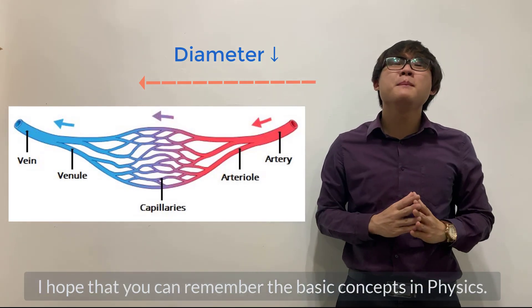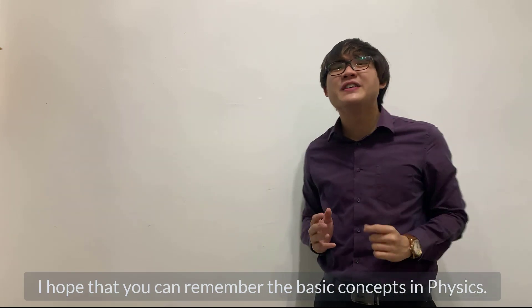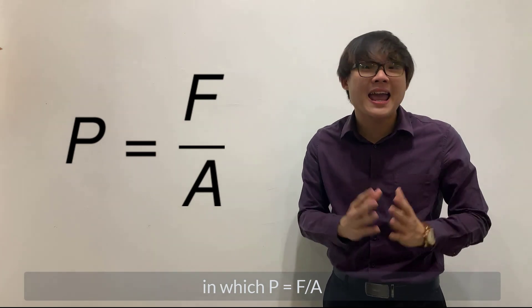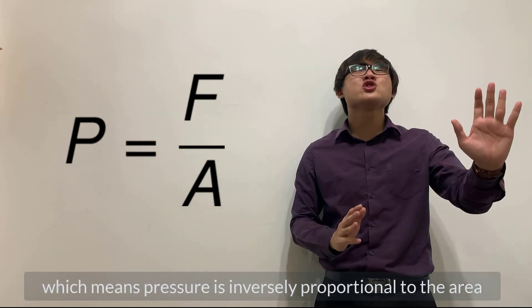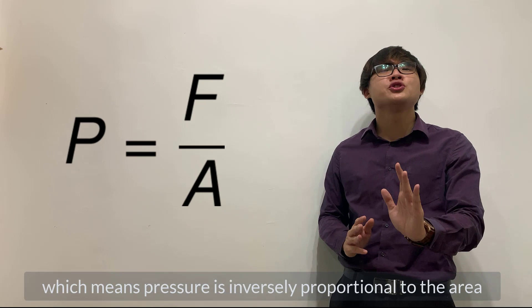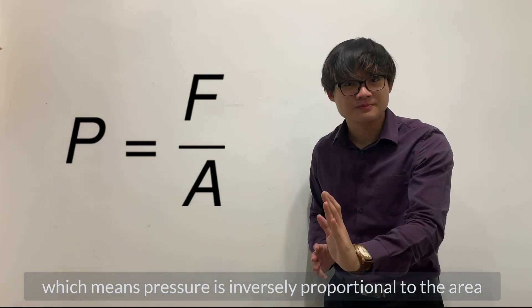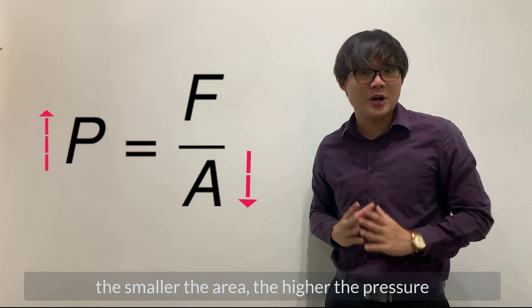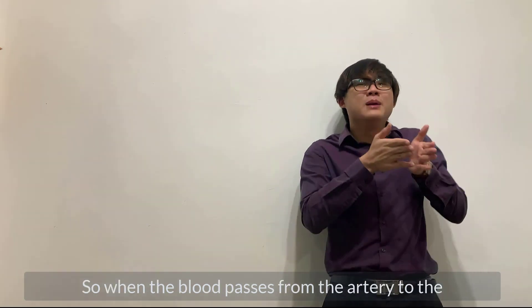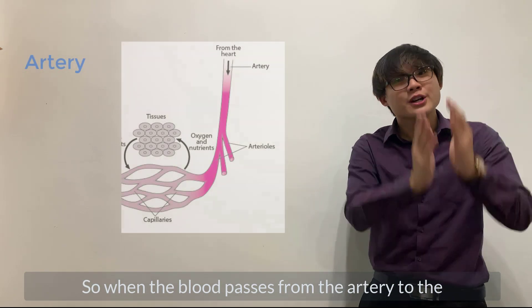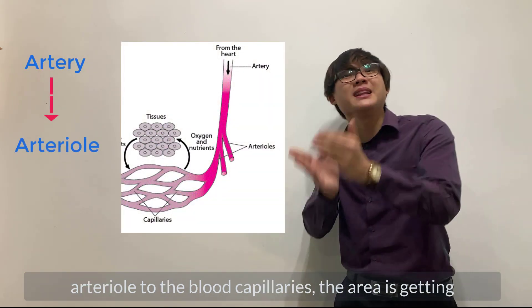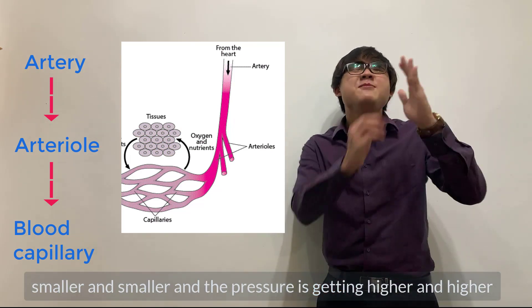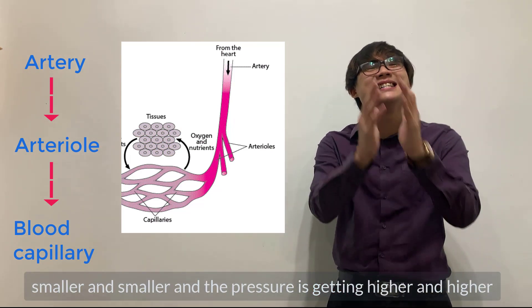I hope that you can remember the basic concepts in physics, in which P equals F over A, which means pressure is inversely proportional to the area. The smaller the area, the higher the pressure. So when the blood passes from the artery to the arteriole to the blood capillaries, the area is getting smaller and smaller, and the pressure is getting higher and higher.